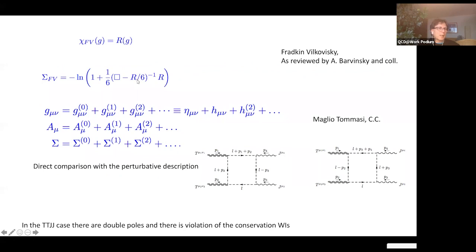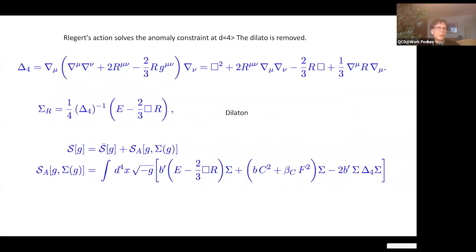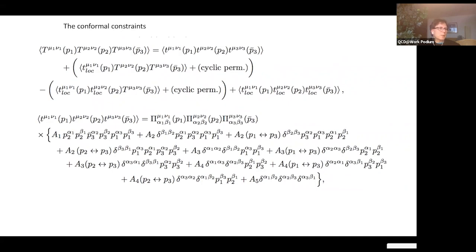For three-point functions with the Fradkin-Vilkovisky gauge, which we hadn't done before, we confirmed that all constraints and conformal Ward identities are satisfied. But as we move to four-point functions, the analysis of ⟨TTJJ⟩ shows that something is missing. We are still investigating, but there should be other papers and we hope the community will also intervene. What is missing are Weyl-invariant terms — those are missing from this discussion.